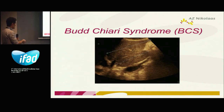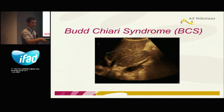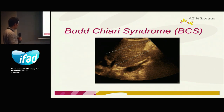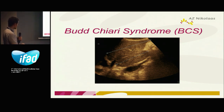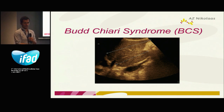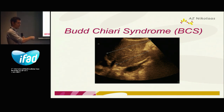The caudate lobe, segment one, which is normally very small, will enlarge and become very large. Why? Because the caudate lobe is the only part of the liver that can drain blood to the heart, since it drains via a vein directly into the inferior caval vein. This is why in Budd-Chiari syndrome patients we have an enlargement of segment one.